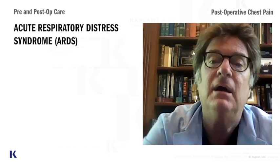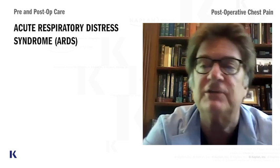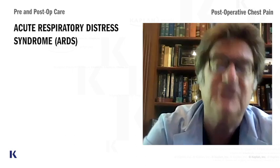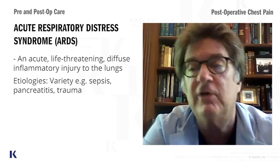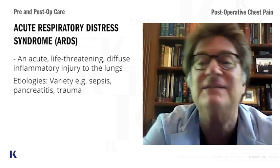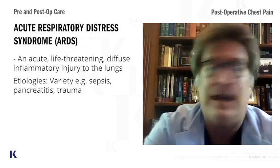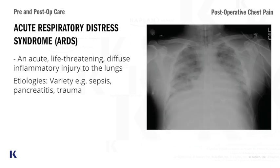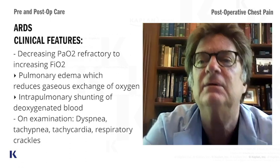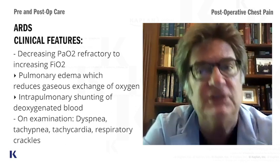One of the pulmonary complications is ARDS — adult respiratory distress syndrome. This is a very, very bad clinical situation. It's commonly caused by sepsis or trauma, and these patients are commonly in multi-system organ failure. You get a chest x-ray and it looks like a snowstorm. How do you clinically tell? It's when they get decreasing PO2 in the face of increasing FiO2.